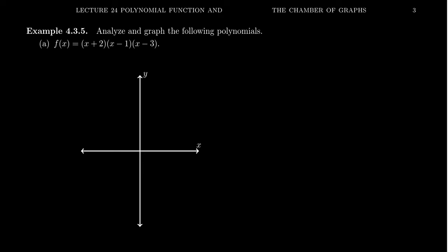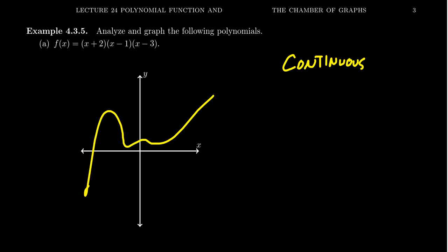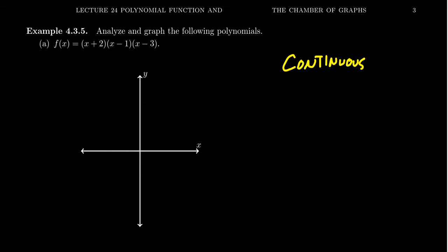When graphing polynomials, remember that the graph of a polynomial is always continuous. A continuous graph will have no gaps, no holes, no rips, no asymptotes. You could draw your picture with one continuous stroke of your pen. Graphs of polynomials are always continuous.